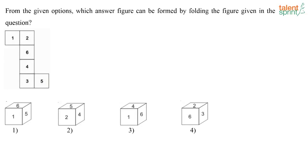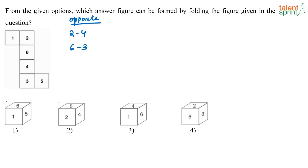From the given options, which answer figure can be formed by folding the figure in the given question? If you actually fold it, you will get: 2 and 4 will be opposite to each other. Similarly, 6 and 3 will be opposite to each other, and 5 and 1 will be opposite to each other.